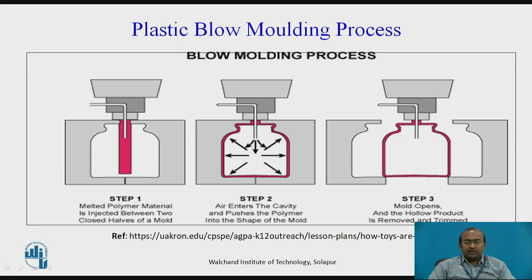In the third stage, you can see that the parison stick is fully expanded and has taken the shape of the inner wall surface of the cavity. It is then cooled down for a very few seconds. Immediately after, the mold halves are moved out from their original position and the completed solidified plastic part falls down. In these three stages, you can see that particular parts can be produced in a very easy way using blow molding.